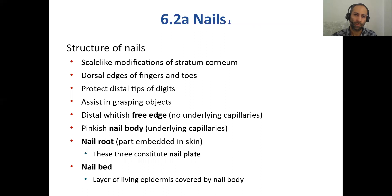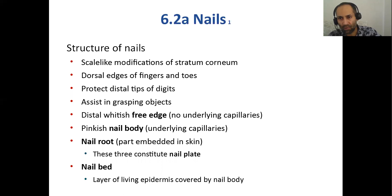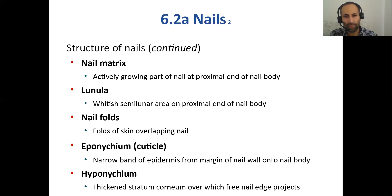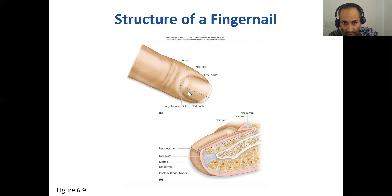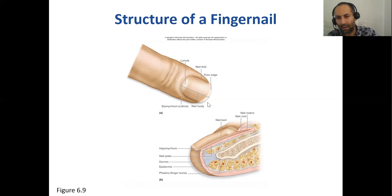Nails are part of your integumentary system — they are modified skin with the same keratinized stratified squamous epithelium at the tips of the fingers and toes. Different parts of the human nail include the nail body, the cuticle from where the nail arises — also called the eponychium — the lunula, the crescent-shaped area, the fold of the nail, and the free edge that hangs over the skin.